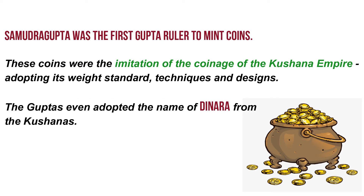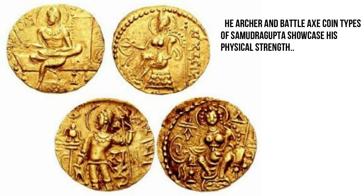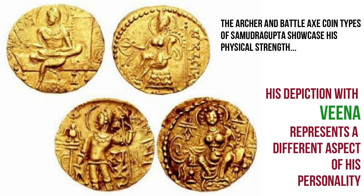Samudra Gupta was the first Gupta ruler to mint coins, which were imitations of the Kushana empire's coinage, adopting its weight standard, techniques, and designs. The Guptas even adopted the name Dinara from Kushana coinage, though the term originally came from the Roman coin Denarius Aureus. His coins portray different aspects of his life — the archer and battle axe types showcase physical power, while his depiction with the veena represents a completely different facet of his personality.